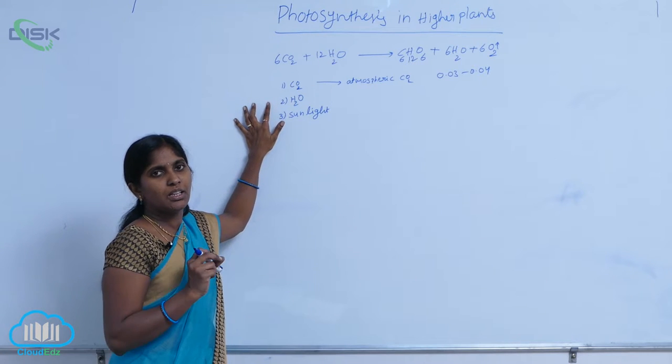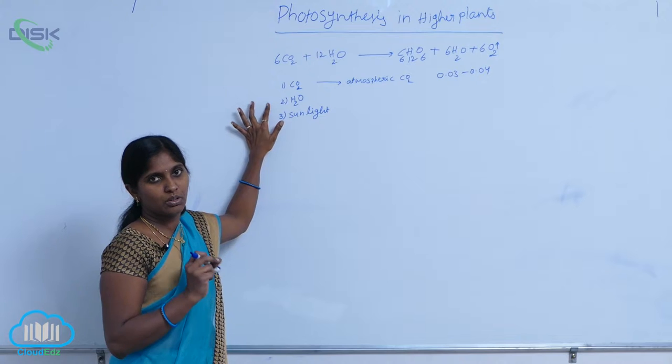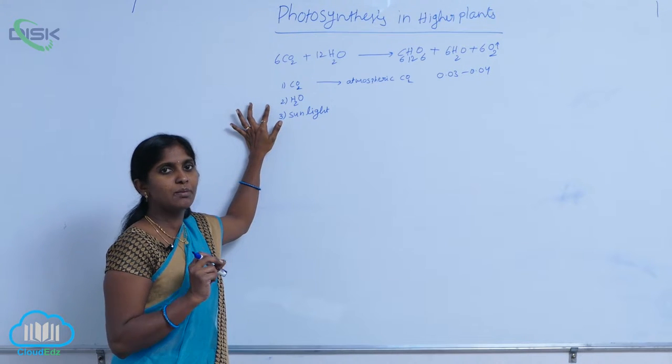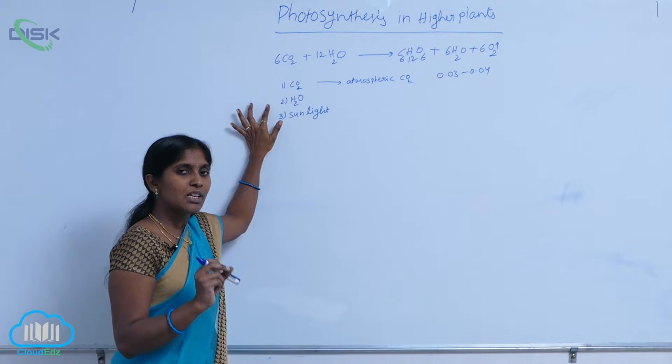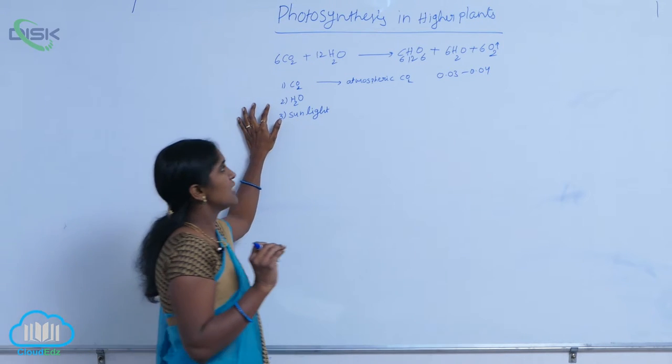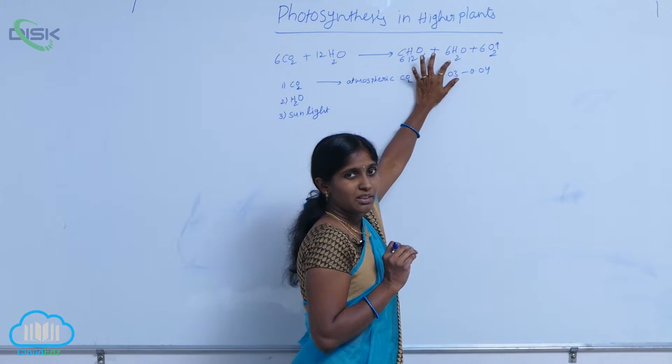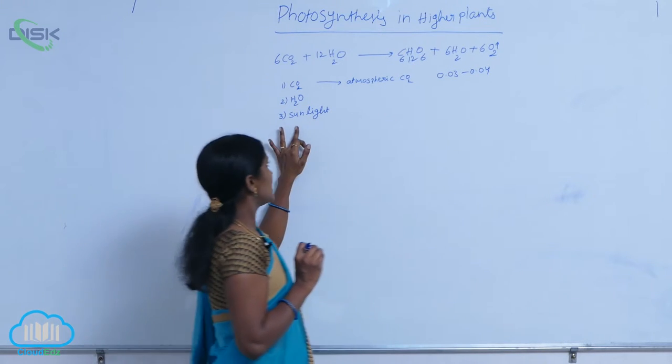From where the plants can get water? The plants absorb the water from soil. So that water is utilized. Part of the water is utilized and water is also regenerated here. And next is sunlight.